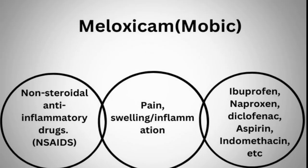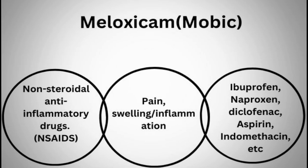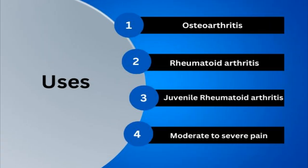Meloxicam is sold under the brand name Mobic in the USA and is also found in other brands in most countries. It belongs to a class of medication called NSAIDs — non-steroidal anti-inflammatory drugs — which are primarily used to treat pain, inflammation, and swelling. Common medications in this class include ibuprofen, naproxen, diclofenac, aspirin, and indomethacin.